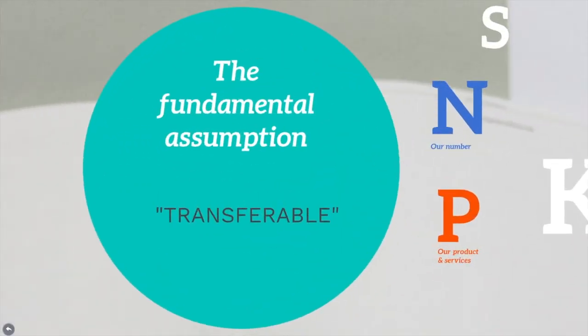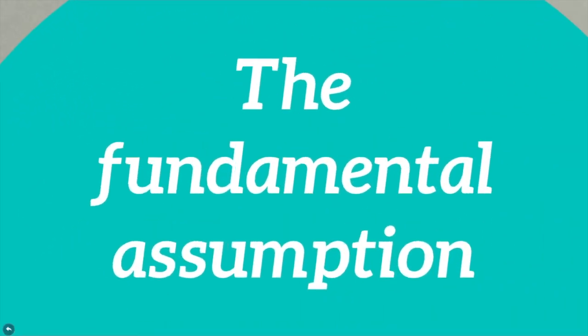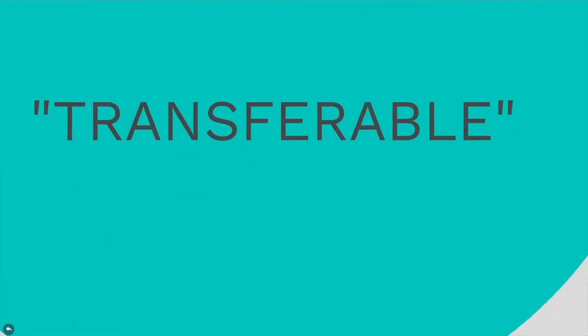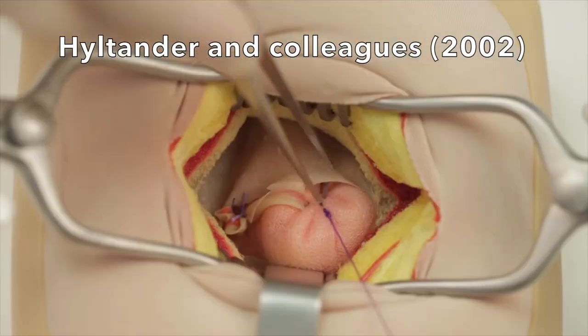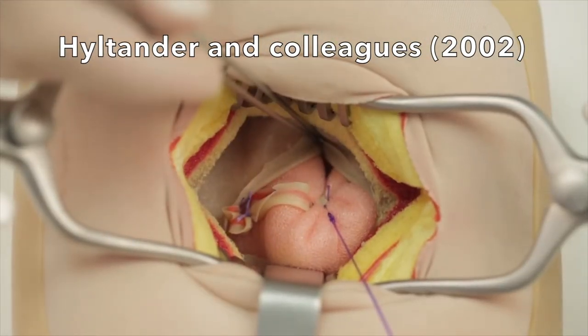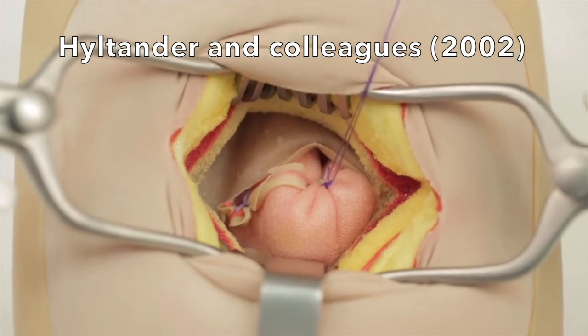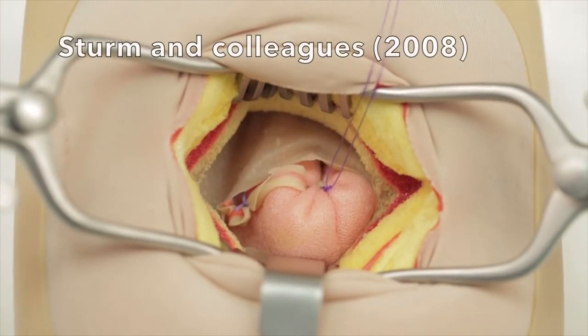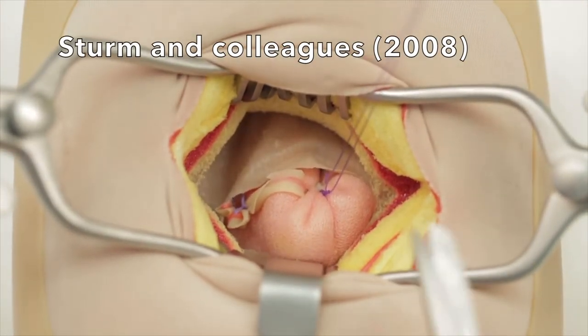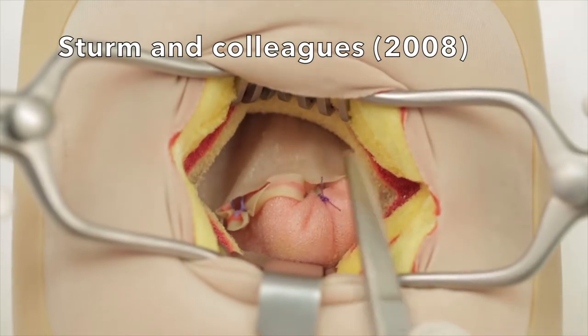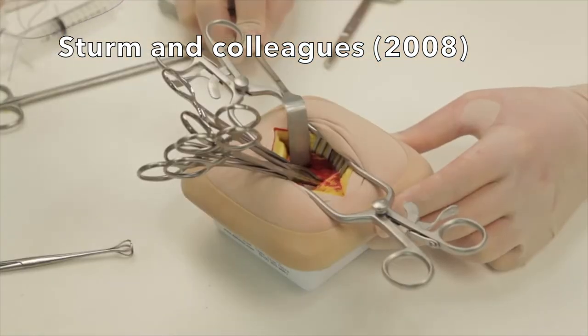The fundamental assumption of simulation-based training is that skills acquired in simulated settings are directly transferable to the performance of the actual task. For example, Hiltander and colleagues demonstrated improved surgical performance in anesthetized animals after simulation-based training. Sturm and colleagues also showed transfer was possible by successfully applying skills in simulator-based training to operative settings in surgery.